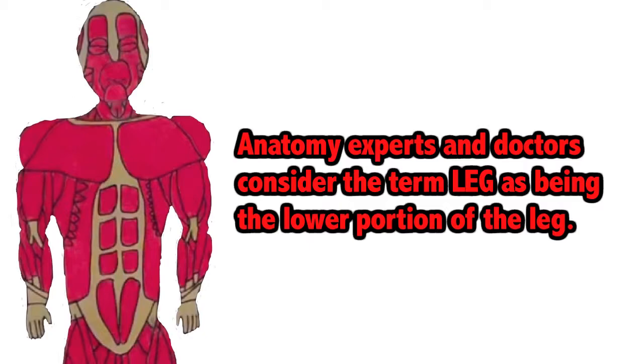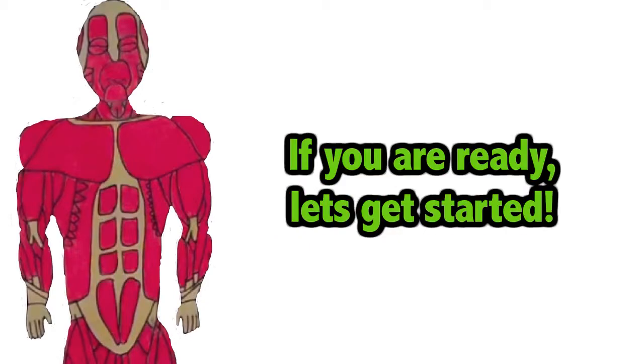Hi everyone, welcome to Sean Allen Films The Educational Series. I'm Sean Allen. This is part five of the muscular system. Last time we looked at the muscles in your arm — if you want to see that episode, click on the annotation above or click the link in the description. Today we're going to be looking at the muscles in the thigh. In case you're wondering, the leg muscles and the thigh muscles are completely different. Anatomy experts and doctors consider the term 'leg' as the lower portion — basically from your knee to your foot. So if you're ready, let's get started.